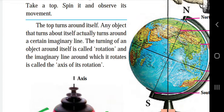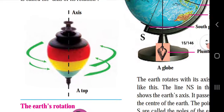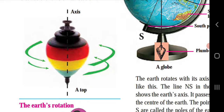The turning of any object around itself is called rotation, and the imaginary line formed on the rotating object is called the axis of rotation. Here you can see the axis of the top and the rotation process. The imaginary colored lines visible when the top rotates will seem less clear when it is still.